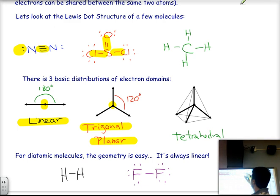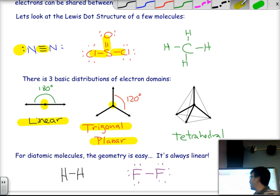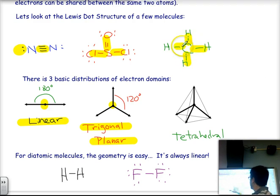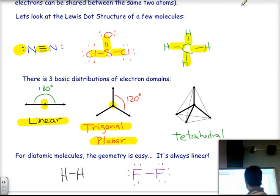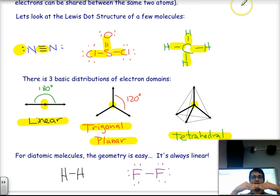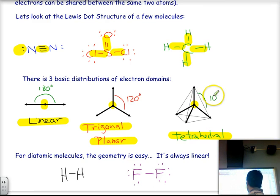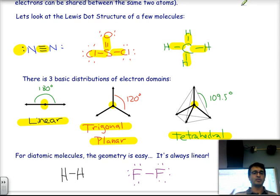For a molecule with four directions, there are four pairs of electrons going in different directions and we want to separate them as much as possible. Rather than staying in a single plane where angles would be 90 degrees, by spreading out in three dimensions we get a tetrahedral distribution, with an angle of 109.5 degrees. Larger angles mean more separation, which is why with four directions you get this tetrahedral shape instead of staying at 90 degrees.